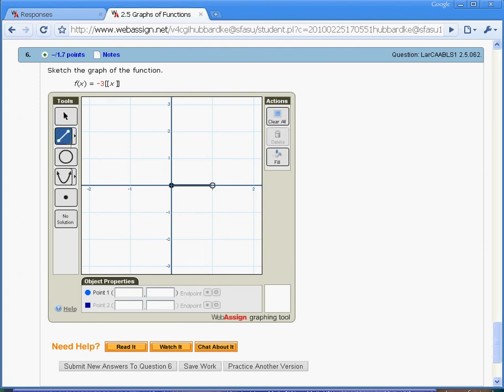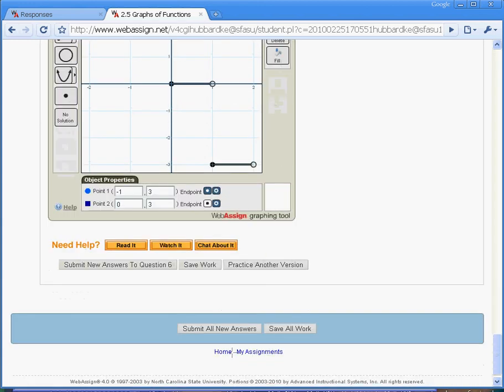New line segment, from 1 to 2 at height negative 3. Left endpoint closed, right endpoint open. New line segment, left endpoint closed, right endpoint open. That ought to get me the right answer.